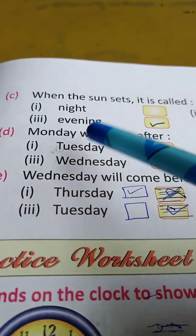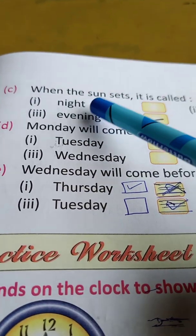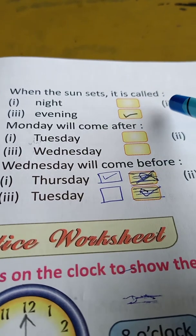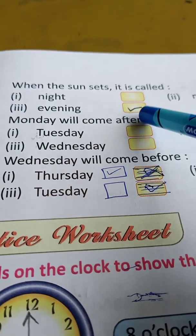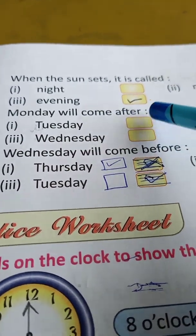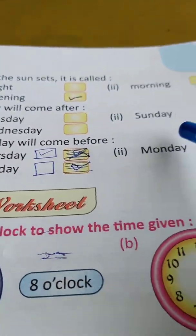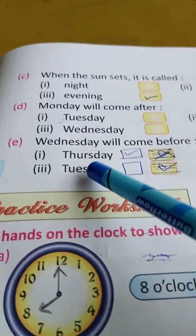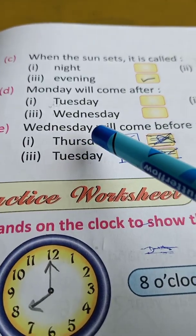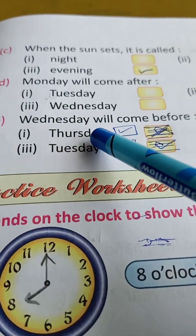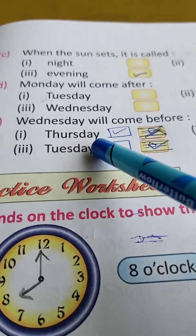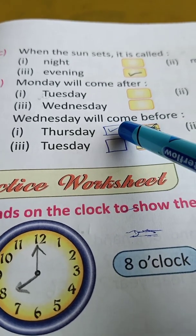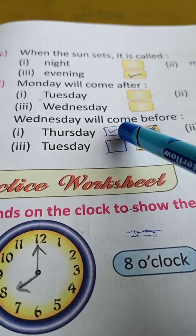Come to part C. When the sun sets, it is called evening. Monday will come after Sunday. Wednesday will come before Thursday. Put a tick here — Thursday.